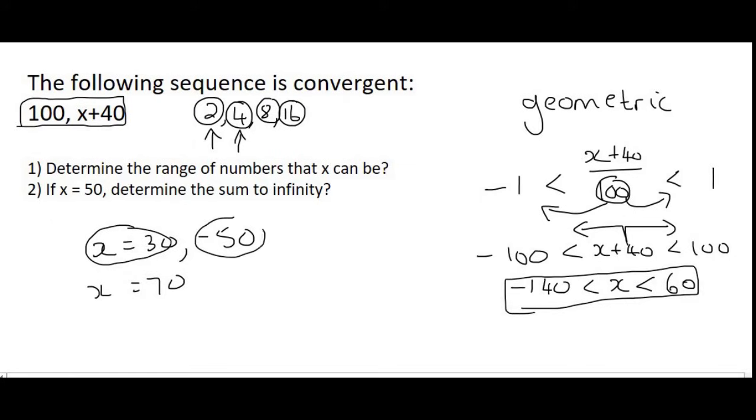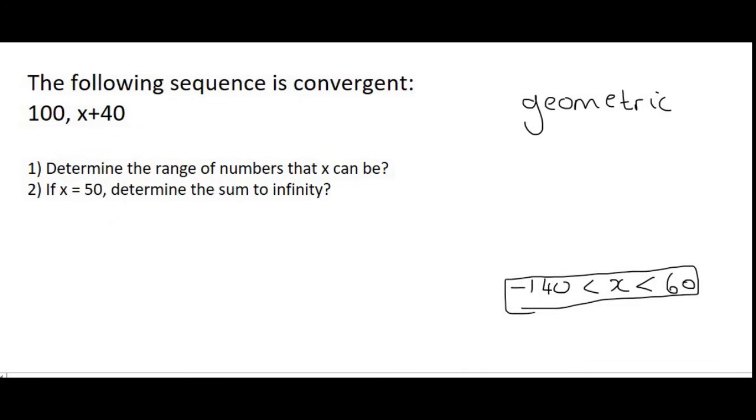And when x was a minus 50 it was also true. But as soon as x became 70 then the ratio became more than 1. And so for number 1 determine the range of numbers that x can be. Here it is. x can be any number that is between minus 140 and 60.